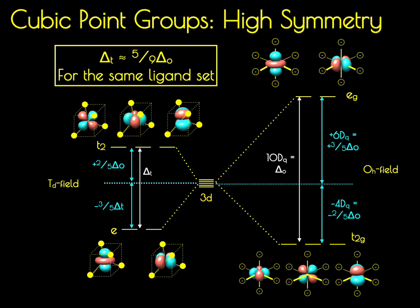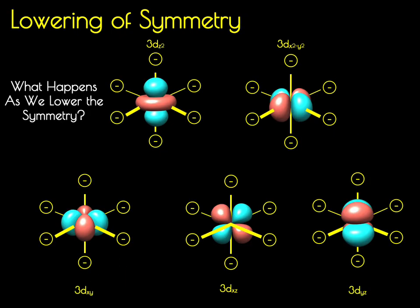Molecules contained in Oh and Td symmetries, described by cubic point groups, are high-symmetry molecules. In this video, we're going to try to understand what happens if we lower the symmetry and descend out of these high-symmetry point groups. For example, what will happen if we take a molecule described by an Oh point group and descend it into something described by D4h?